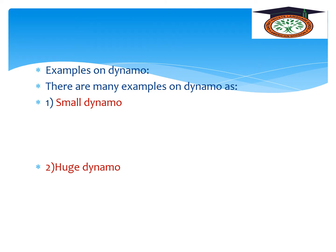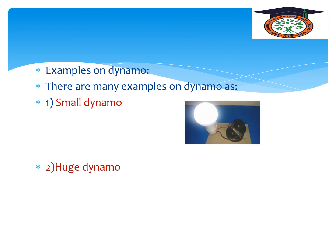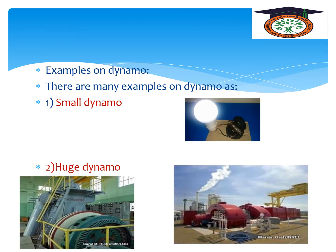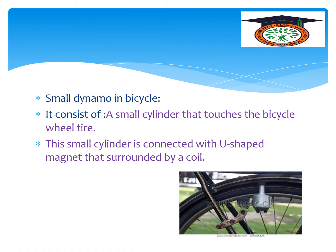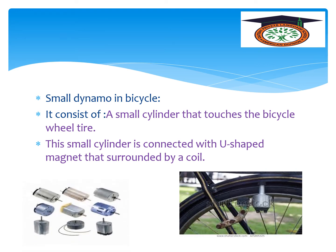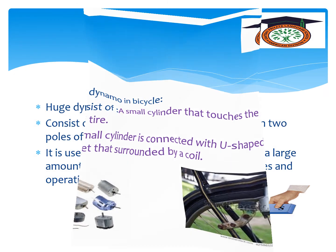There are two types of dynamo: small dynamo and huge dynamo. The small dynamo can be found in a bicycle. It consists of a small cylinder that touches the bicycle wheel tire, connected with a U-shaped magnet surrounded by a coil. It generates a small amount of electricity used to light the bicycle's bulb.